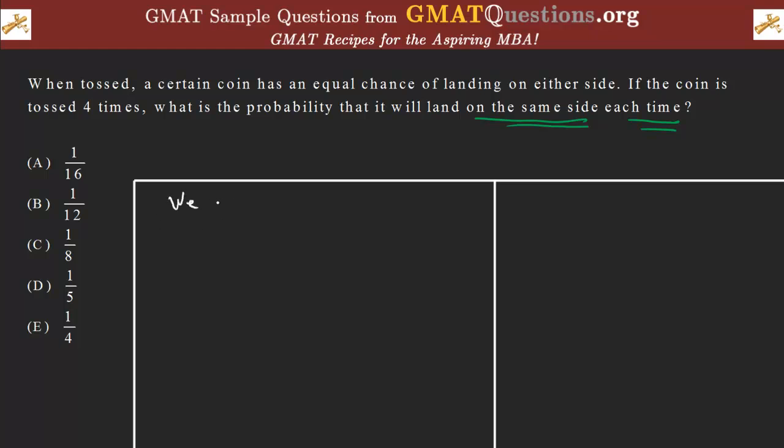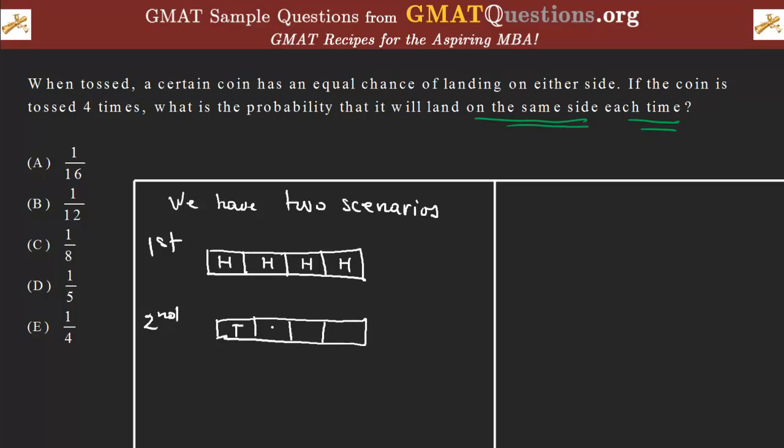So we have two scenarios. The first scenario is to have head, head, head, head, because four times. Or we could have, you guessed it, tail, tail, tail, and tail.